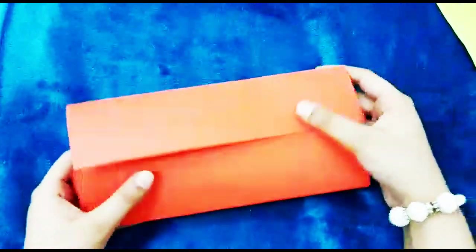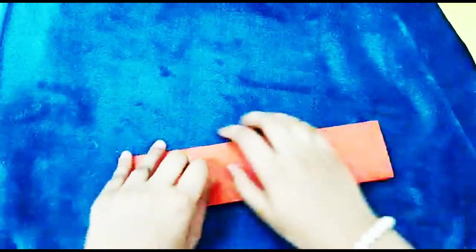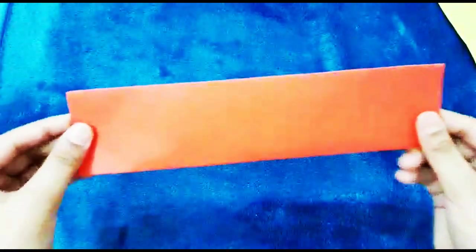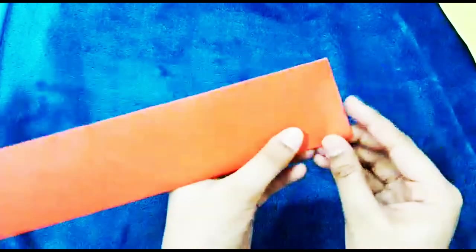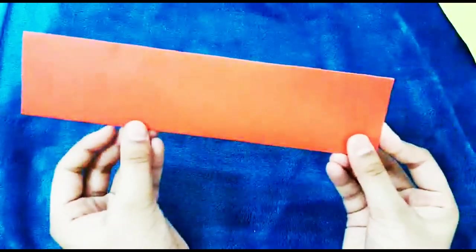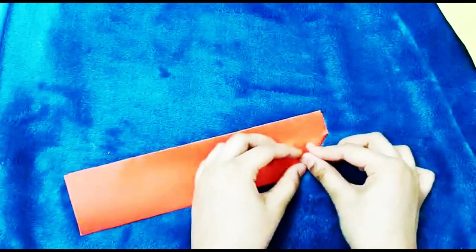So you form like this, and then you have to fold this thing also into half. Now you get a strip. Now you have to fold these two right angles here, as you can see, into a triangle.